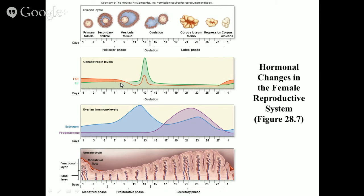Meanwhile, LH has been released in small amounts and fluid production is taking place inside the follicle. Then all of a sudden there's an LH surge — a sharp spike in LH production around day 12. Luteinizing hormone causes the follicle to drastically overproduce fluid, which causes the follicle to burst. This is ovulation — the egg has been released. After the egg is released, LH and FSH levels sharply drop, because now it's all about the follicle forming into a corpus luteum to produce progesterone and coordinate with the uterine cycle.